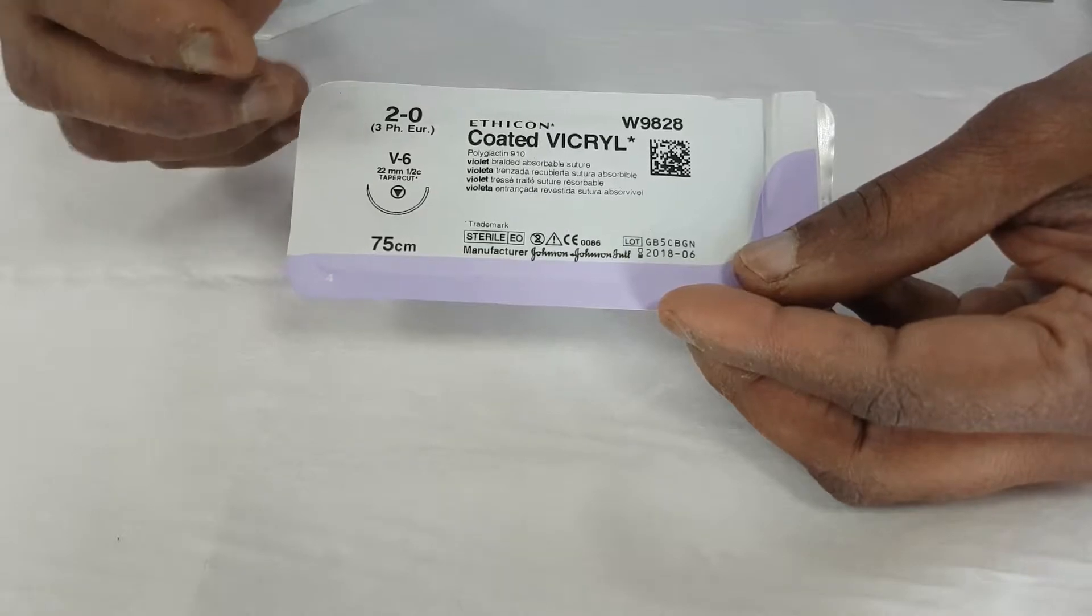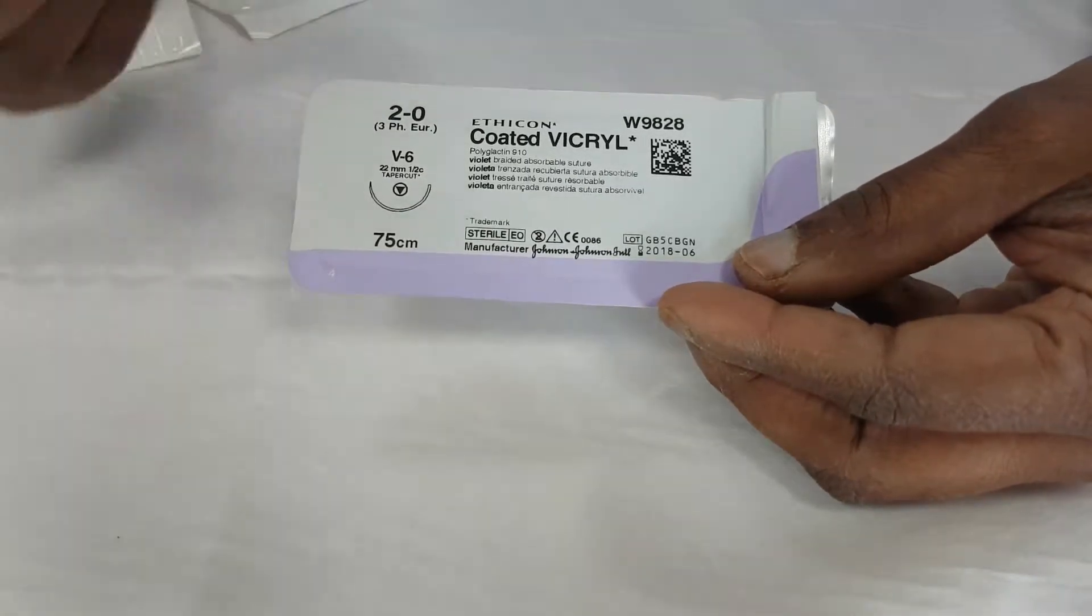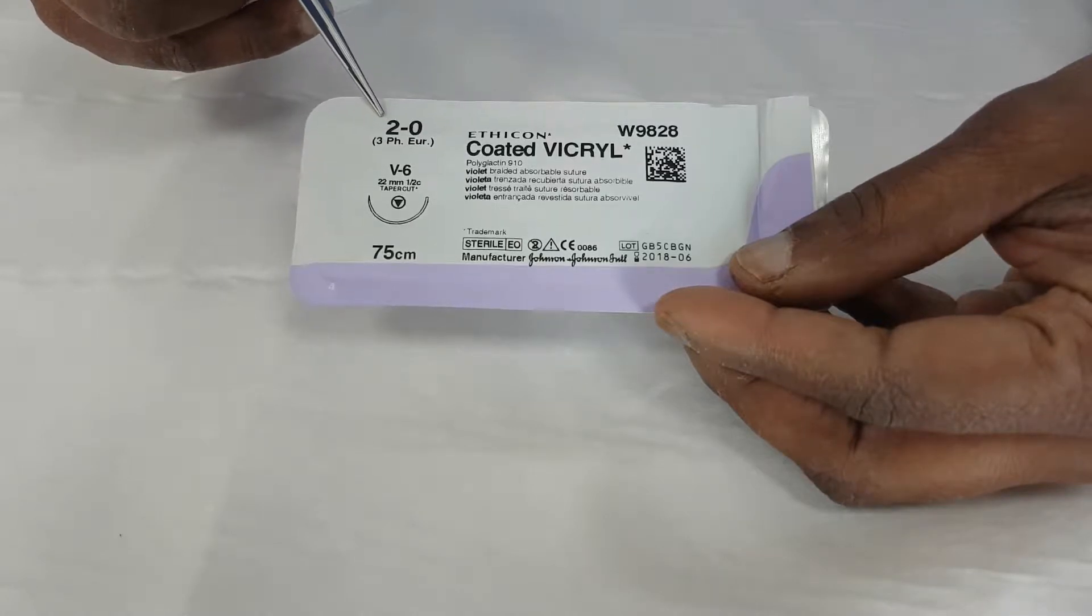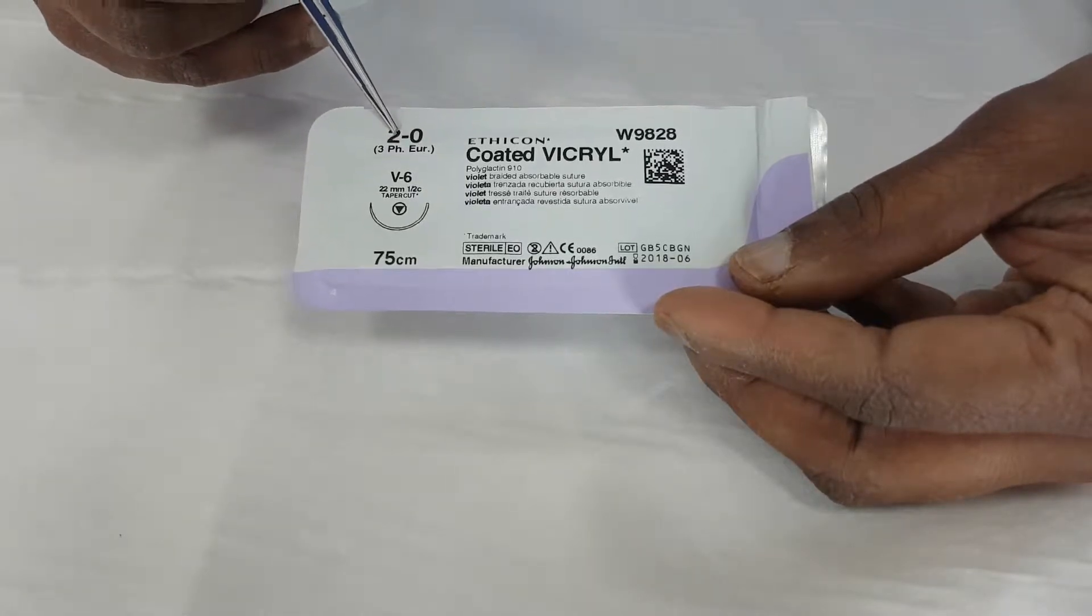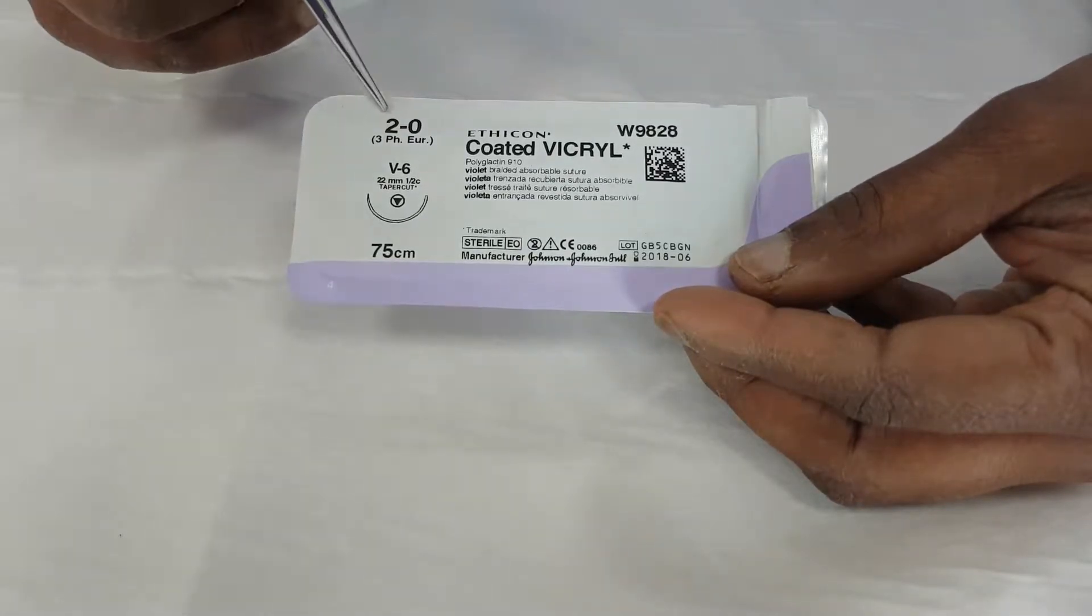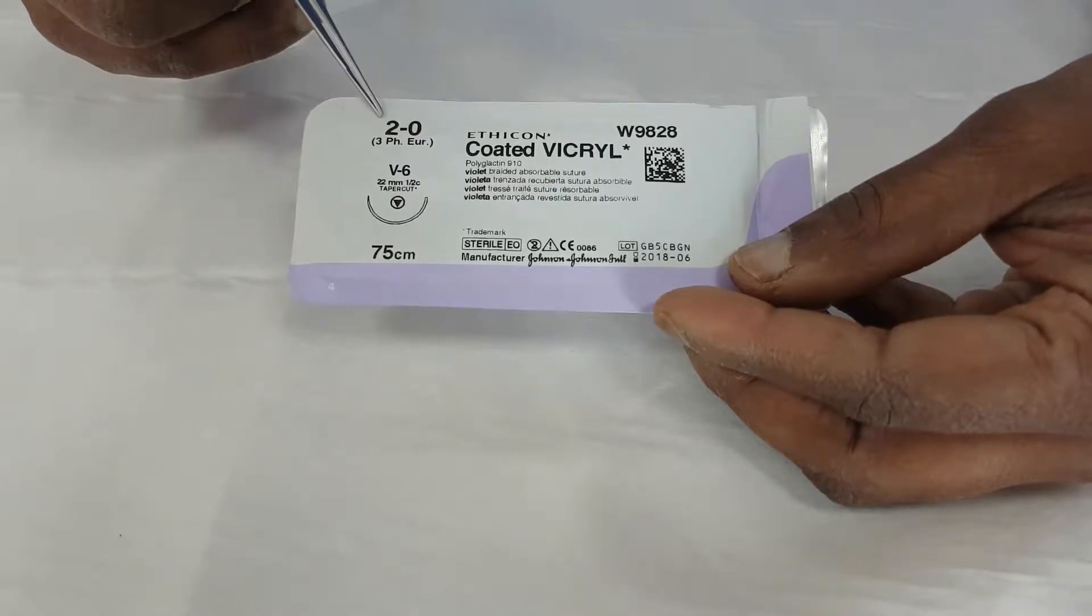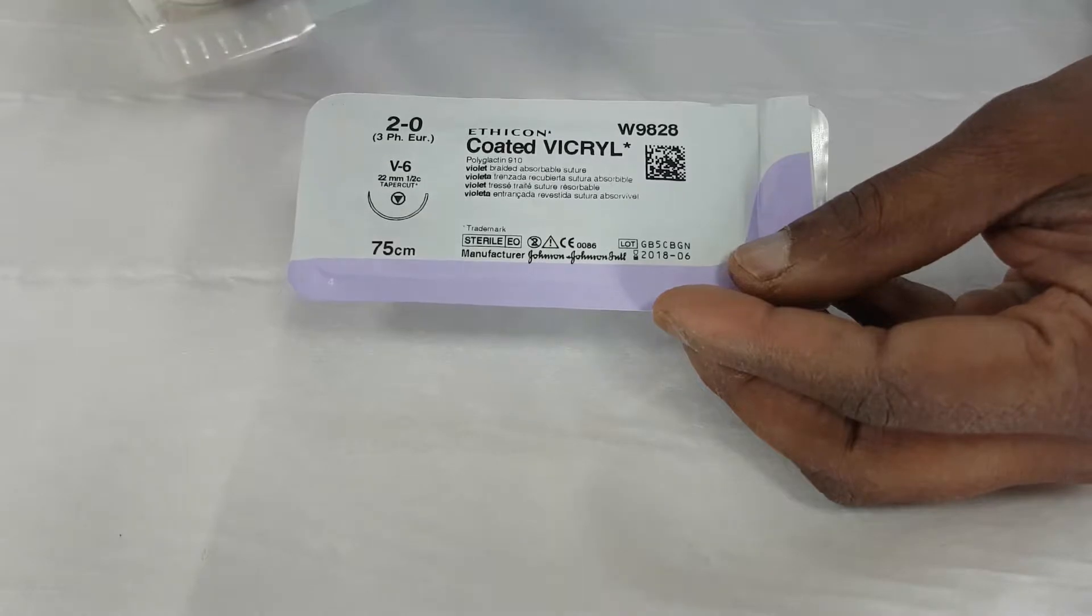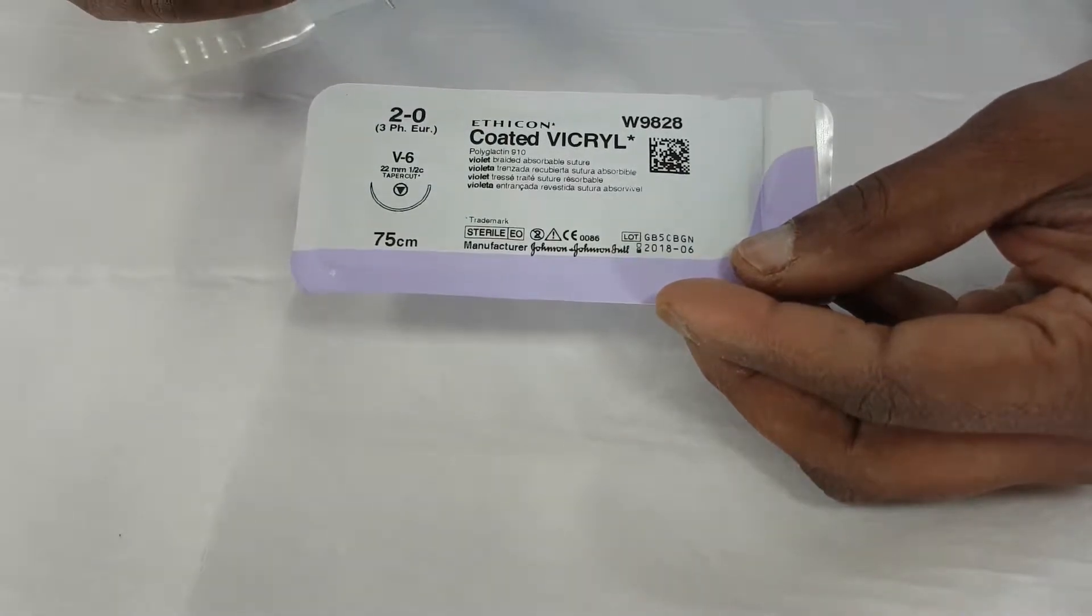When you look at a stitch and pick it up, the first thing to do as well as looking at the material that's used is the size of the stitch. The bigger the number, the smaller the stitch. So a 1-0 would be an even bigger stitch, but an 11-0 would be a very tiny stitch that we might use for microsurgery.